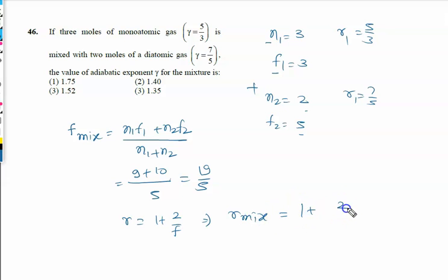as one plus two by f of the mixture is nineteen by five. So gamma for the mixture we will calculate: five into nineteen, nineteen plus ten, twenty-nine by nineteen. We will solve it, it is one point five two. The right answer to this problem is option three, that is one point five two.